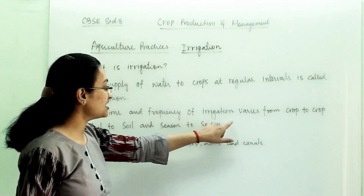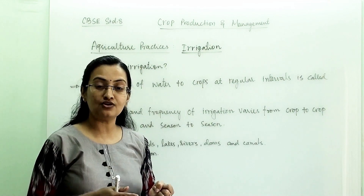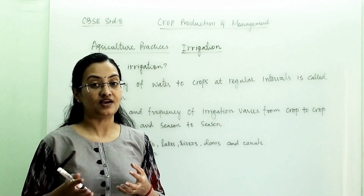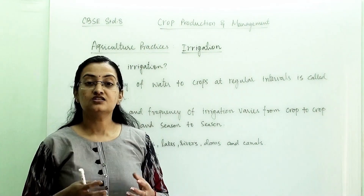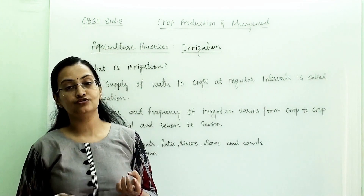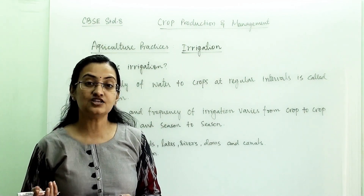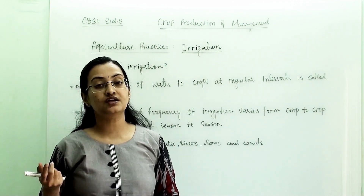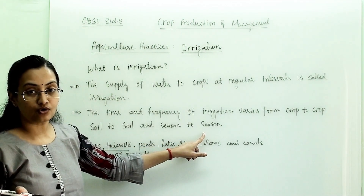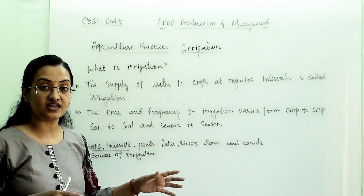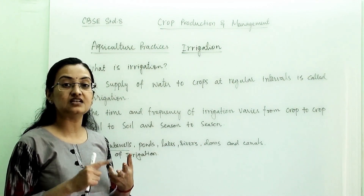The time and frequency of irrigation varies from crop to crop, soil to soil, and season to season. Paddy fields require much more water compared to wheat. Some soils can retain moisture for longer periods, so their water need is less, whereas sandy soils lose moisture very fast and require more water. Similarly, whether it is a rabi crop, kharif crop, or a dry season, the water level will vary accordingly.